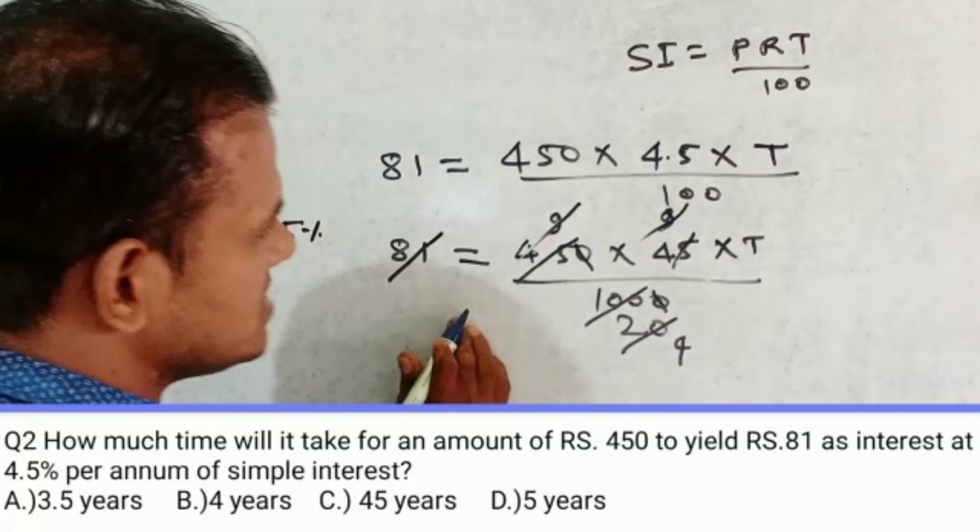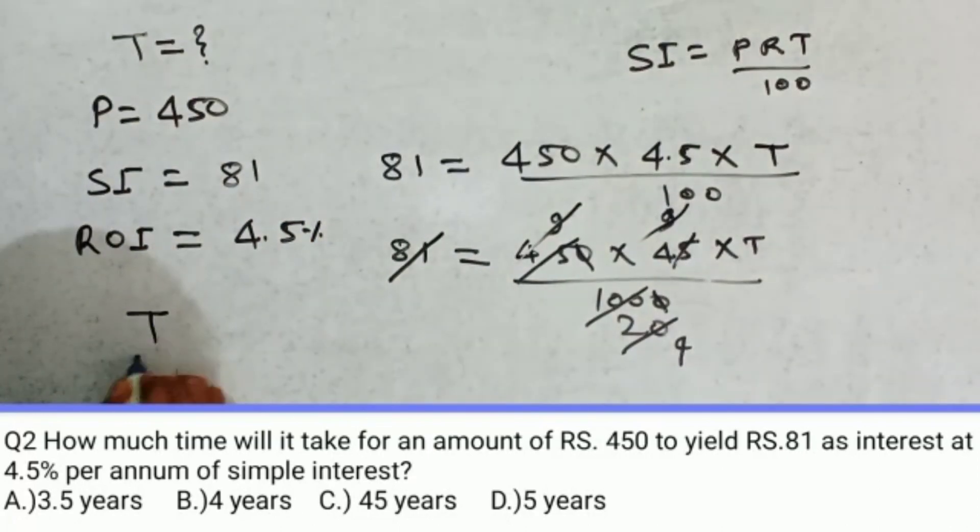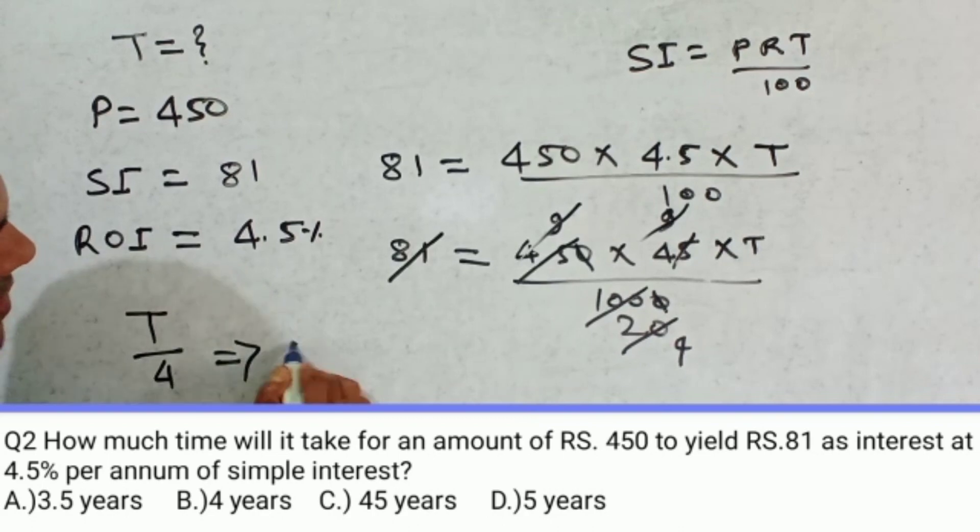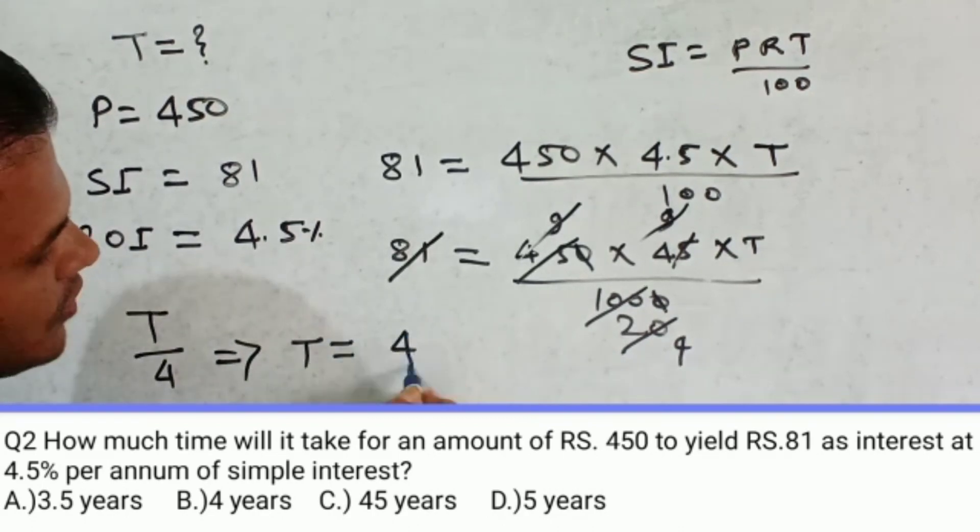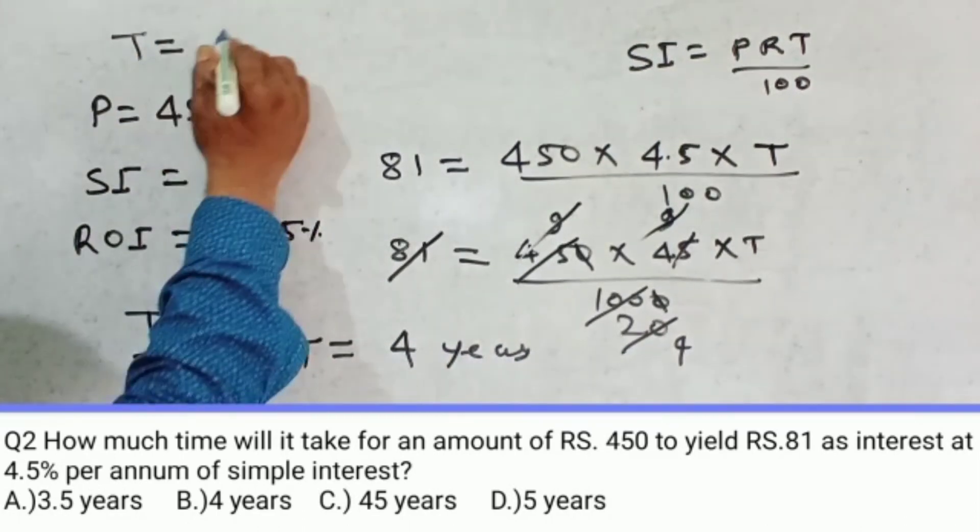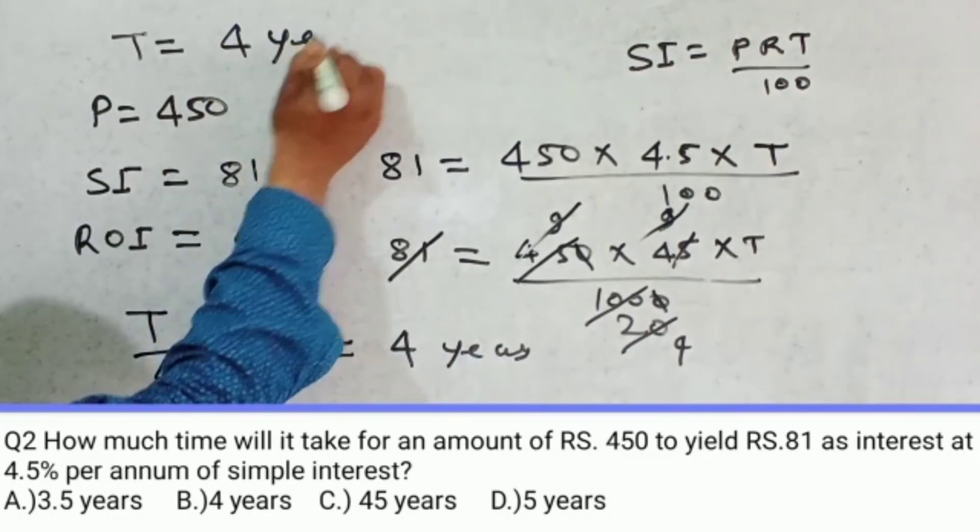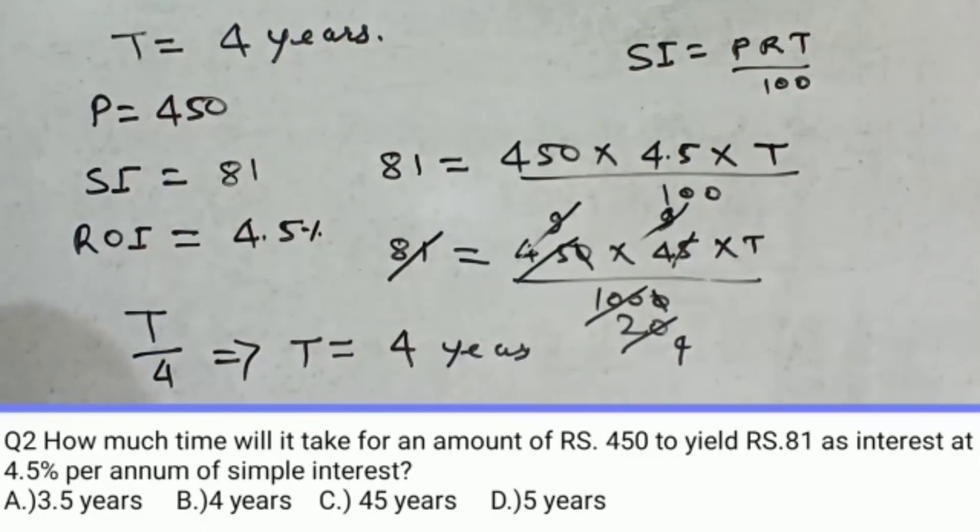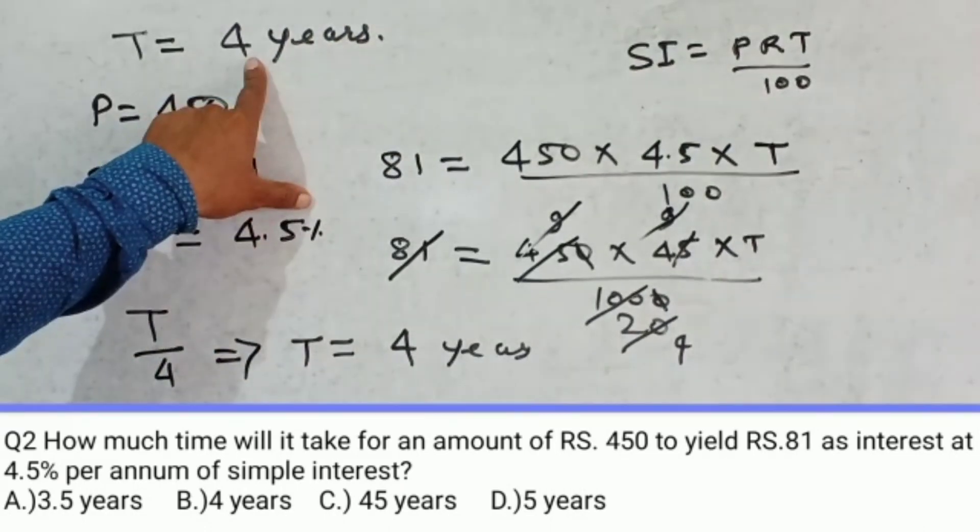So T by 4, so T by 4 means T is equal to 4 years. So the time is 4 years. The time is 4 years.